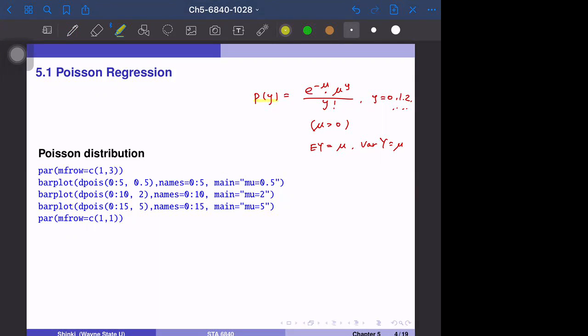The Poisson distribution for the count variable y is given by: probability of y equals e to the power mu times mu to the power y divided by y factorial, where y is 0, 1, 2, 3, and can be infinitely large. Mu is a positive parameter. The expected value of y is mu and the variance of y is also mu. So mu dominates both expectation and variance.